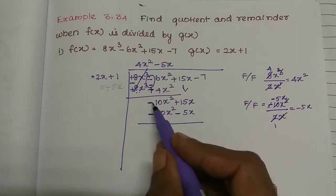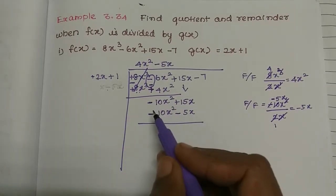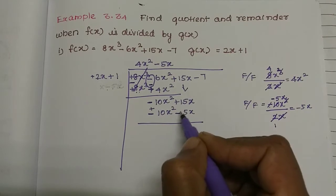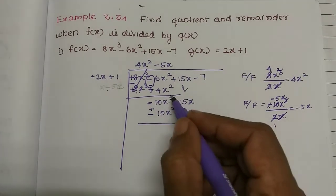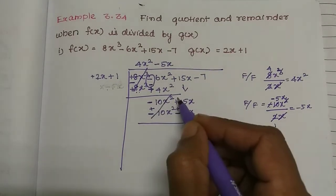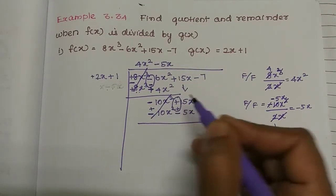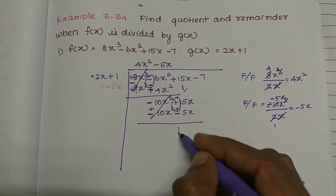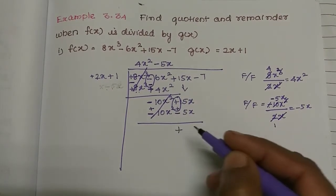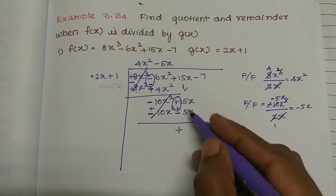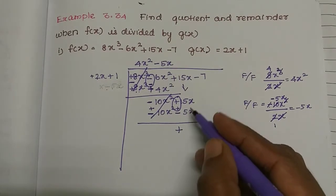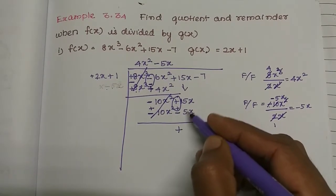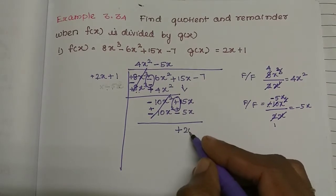Now we change the symbol. We need to change the signs: minus becomes plus. After grouping, the two plus symbols add together. So 15x plus 5x is equal to 20x.